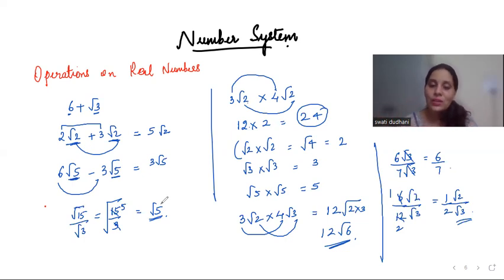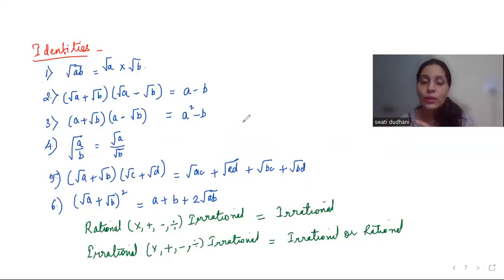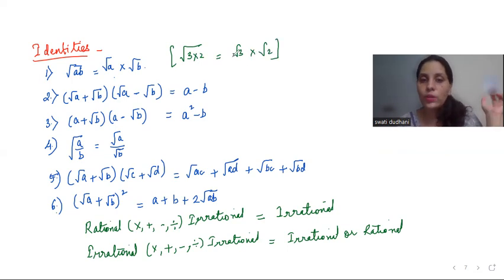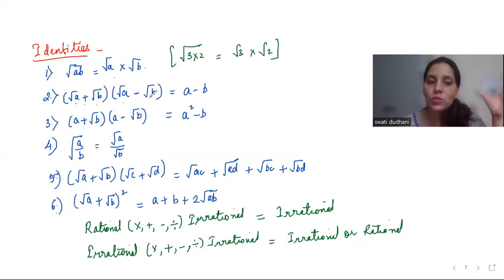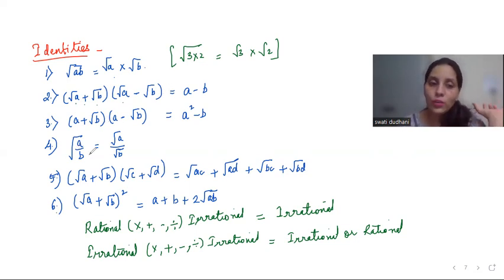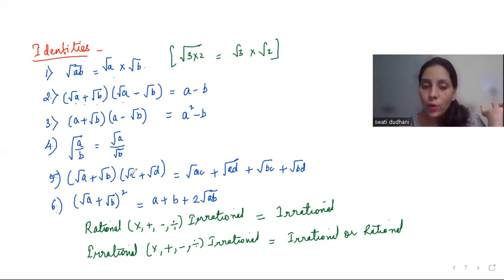Now let's look at some identities. Root(ab) equals root a into root b — for example, root 6 is root 3 into root 2. Next, (root a + root b)(root a − root b) equals a² − b², so the roots get cancelled. The remaining identities follow patterns we've already seen.